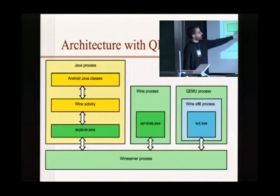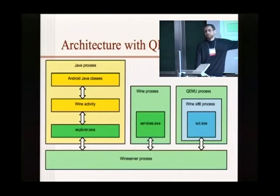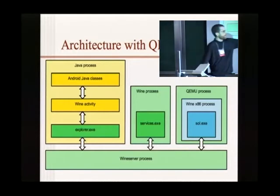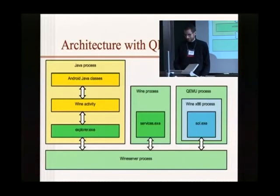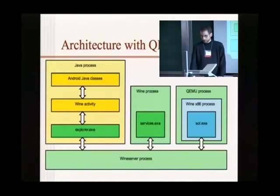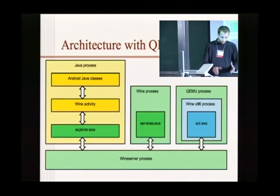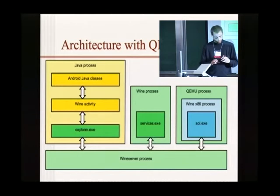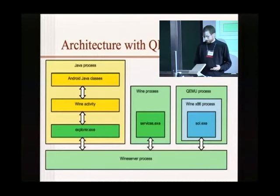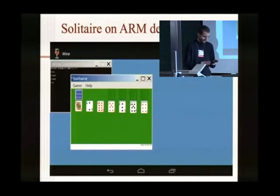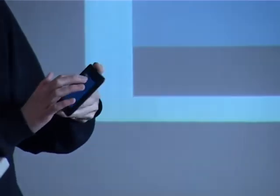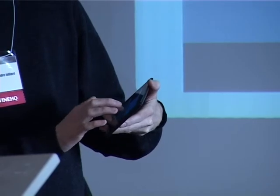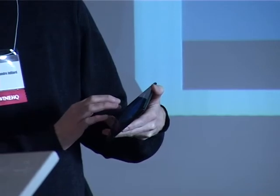The drawback with this approach is that because all Wine components are native binaries, you basically need two full versions of Wine — the ARM version for all the Wine processes and the x86 version for the QEMU process. So it makes the package twice as big, which was already a problem with just one version. But it's working, and I actually have a device here. I have a screenshot of it — I still brought the device so you can see I'm not cheating.